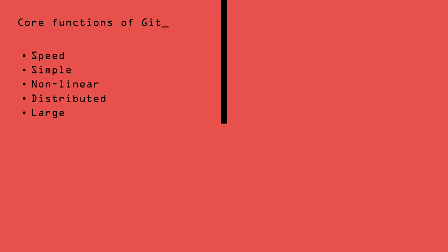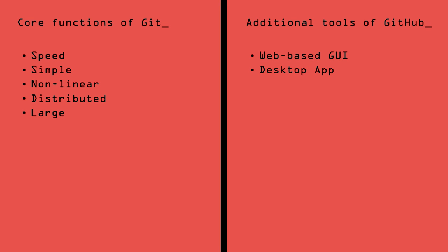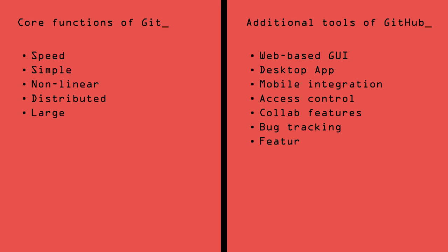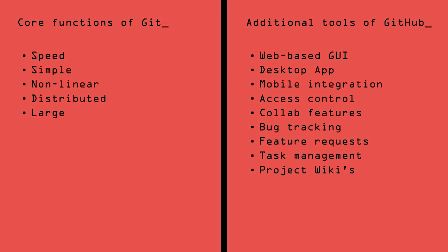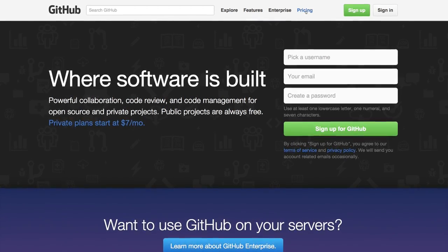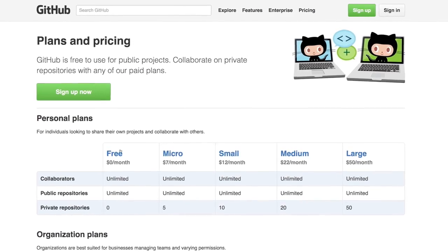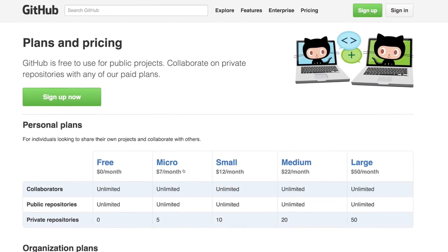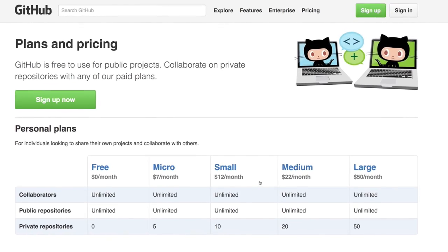In addition to the functions of Git, GitHub offers additional tools such as a web-based graphical user interface, desktop, and mobile integration. It also provides access control and several collaboration features such as bug tracking, feature requests, task management, and wikis for every project. GitHub.com offers plans for both private repositories and free accounts, which are usually used to host open source software projects.